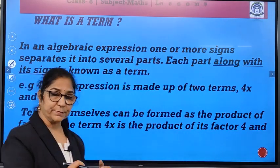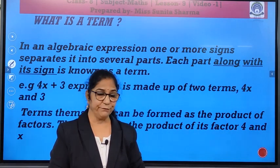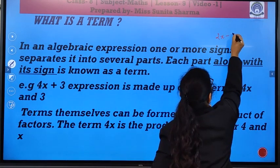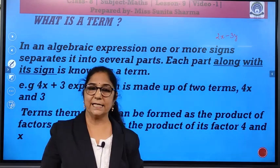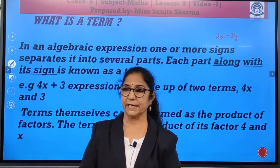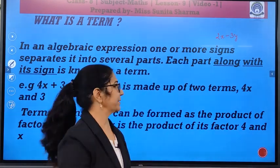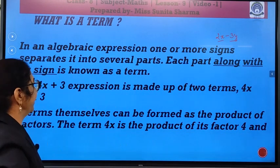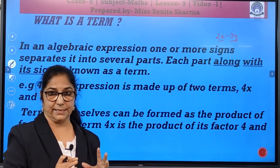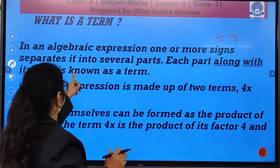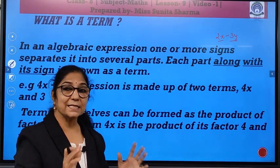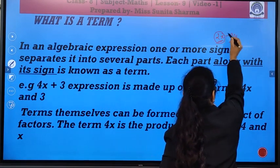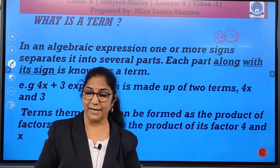Well, then we shall learn about terms. What are the terms? Now, in expression we see, children, we write like, 2x minus 3y. Can you tell me how many terms are there? There are two terms. One is 2x and another one is minus 3y. So, in an algebraic expression, one or more signs separate it into several parts. Each part along with its sign is known as term, along with its sign. Here, there are two terms. But, first one you will write as 2x, another one you will write as minus 3y.